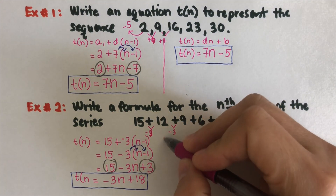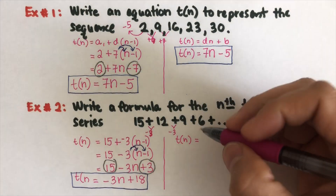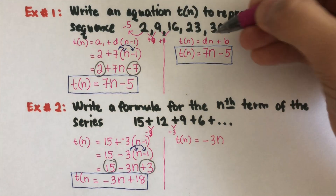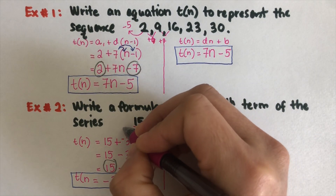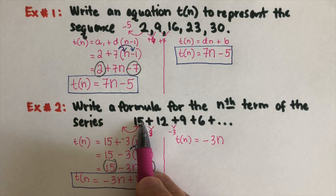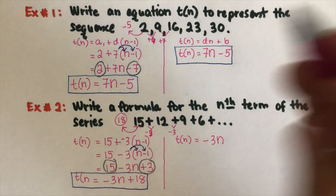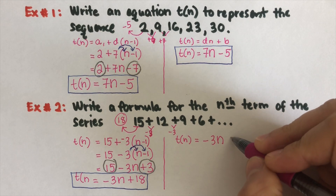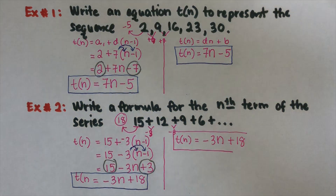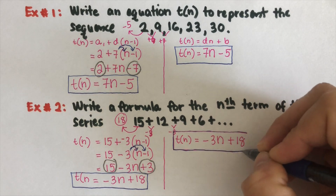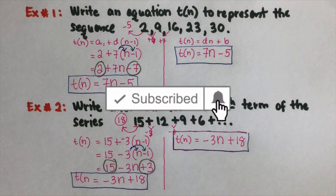Using the second formula for the same example: the difference is negative 3, so we write negative 3n. The zeroth term is the number before the first term of 15. Since the sequence decreases by 3, going backwards we add 3, giving us 18 as the zeroth term. So t of n equals negative 3n plus 18 — the same result. If you find this video helpful, please like and subscribe for more math videos. See ya!